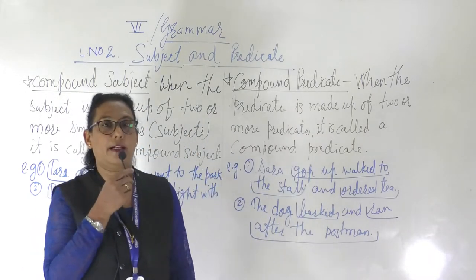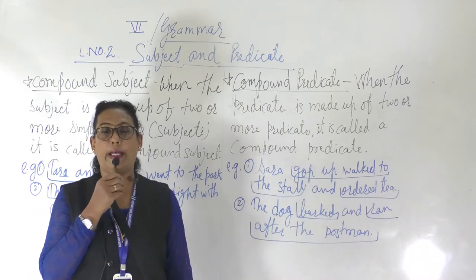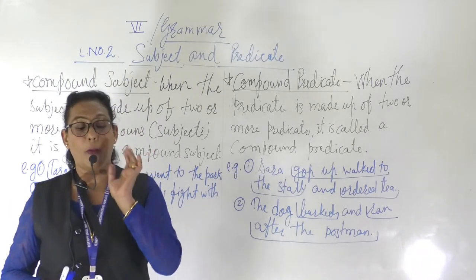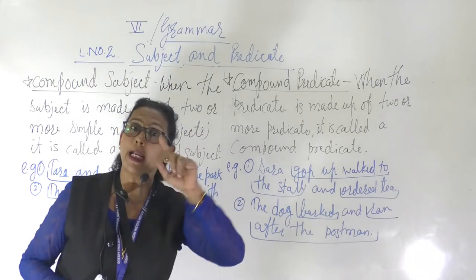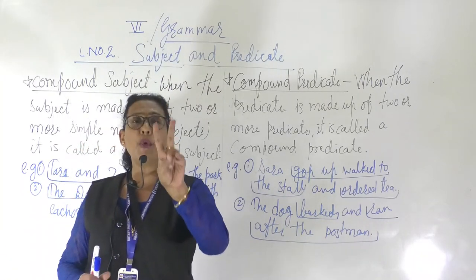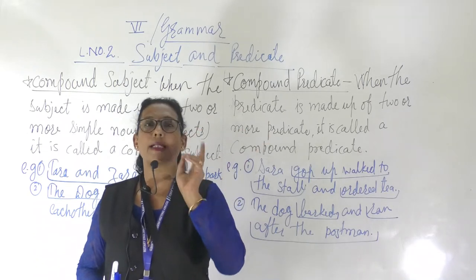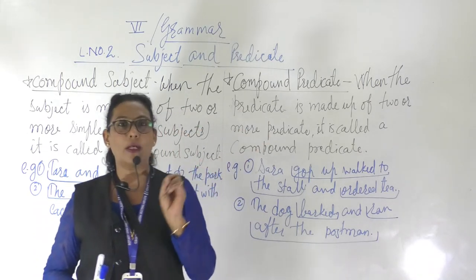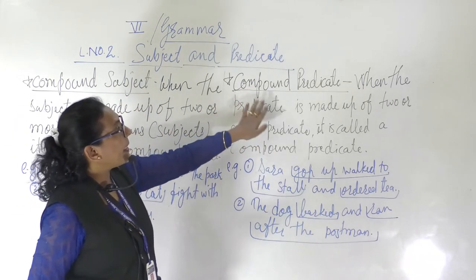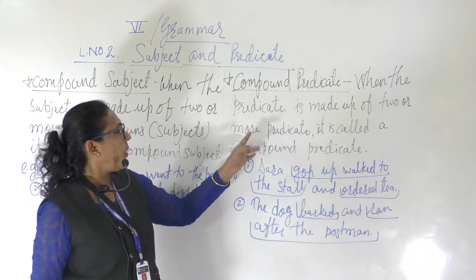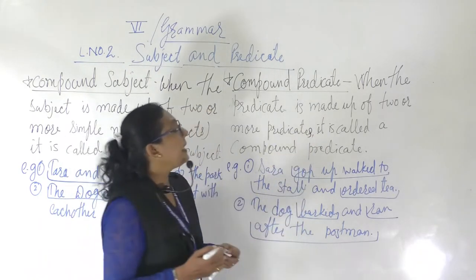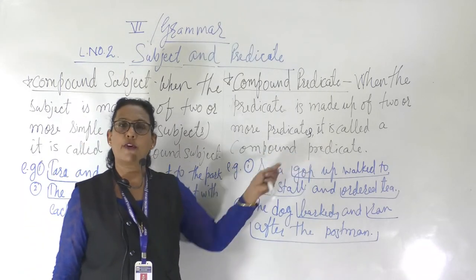Very easy to understand, children. Wherever two nouns or more than two nouns come together, it is called a compound subject. The same thing applies to the predicate. The predicate tells us the details about the noun. When telling about two things about the noun, that is called a compound predicate — when two predicates come together, it is called a compound predicate. When the predicate is made of two or more predicates, it is called a compound predicate.